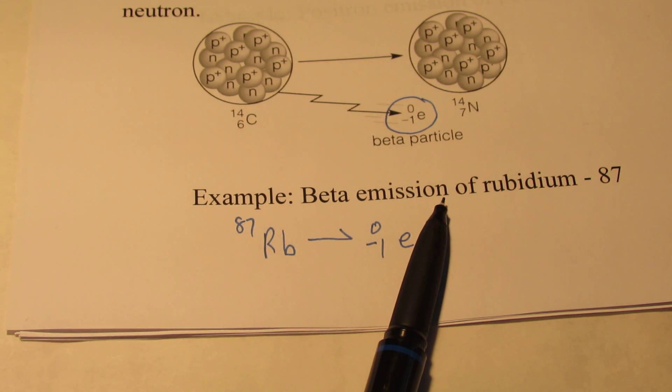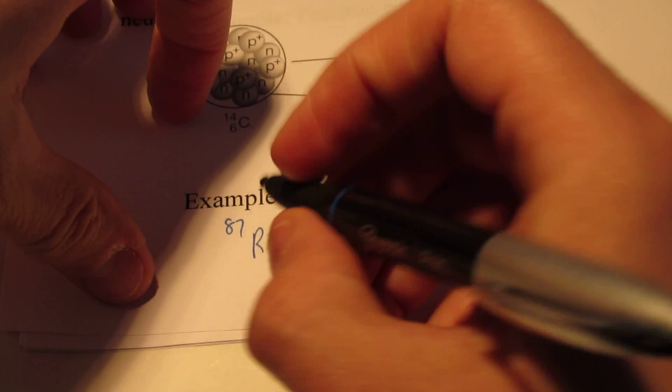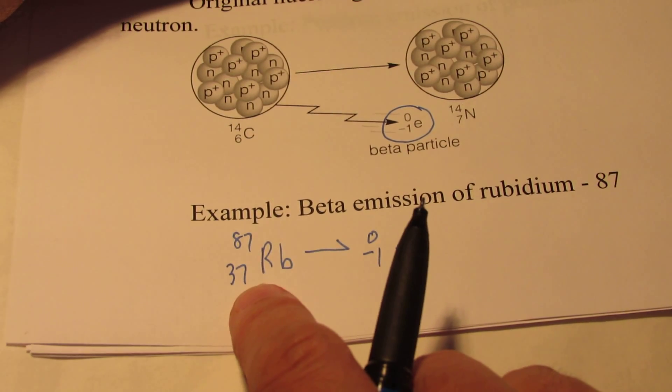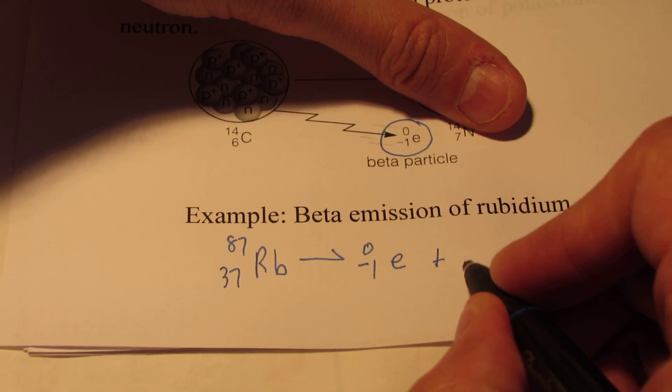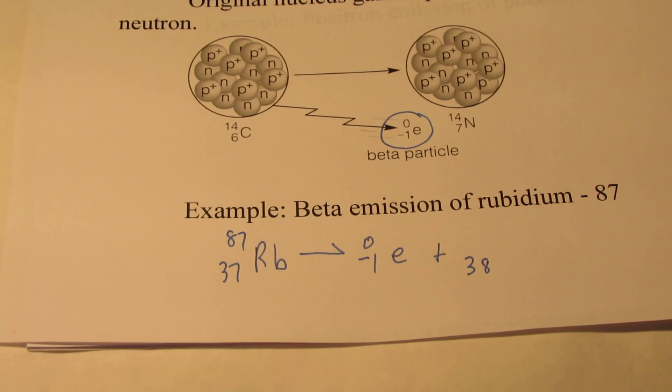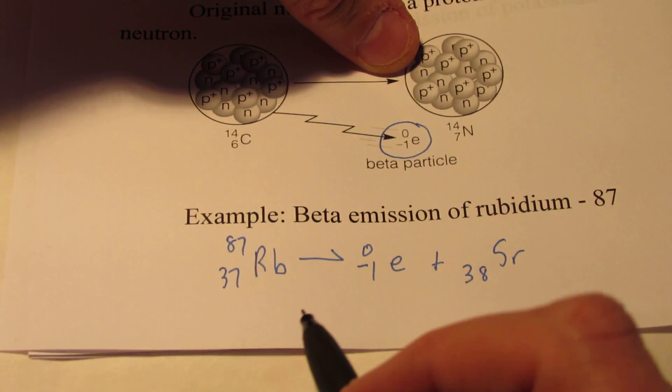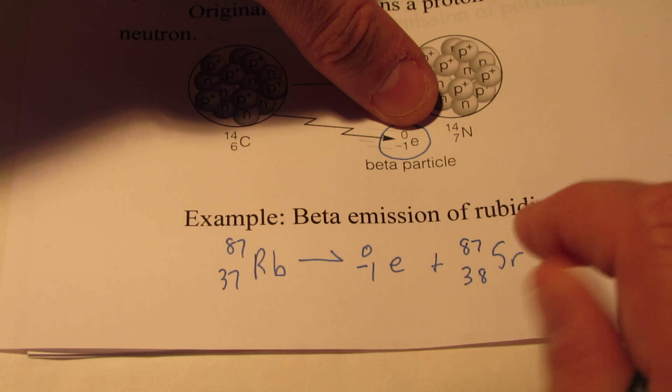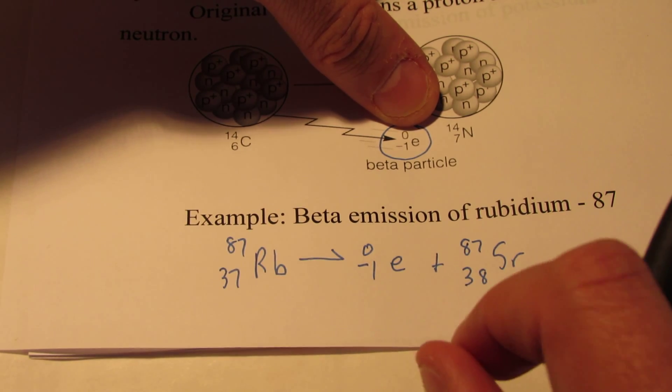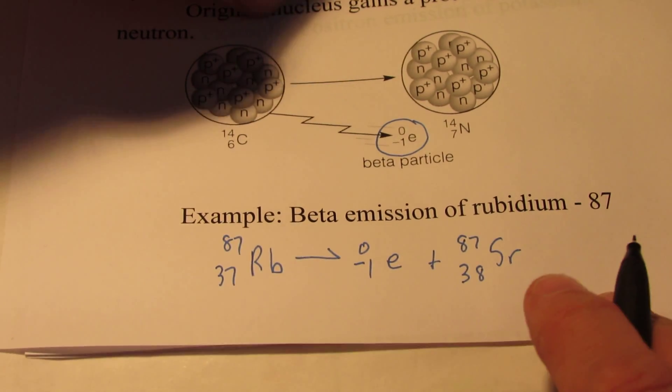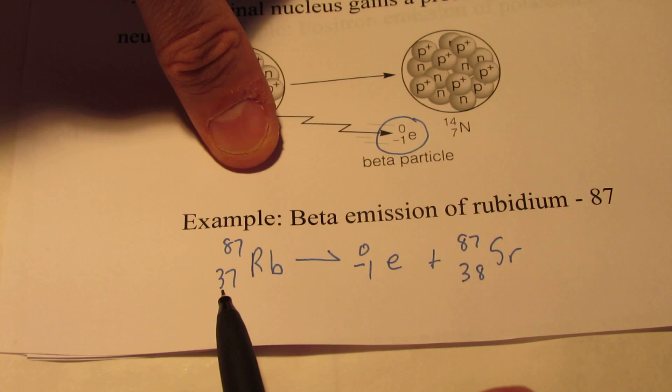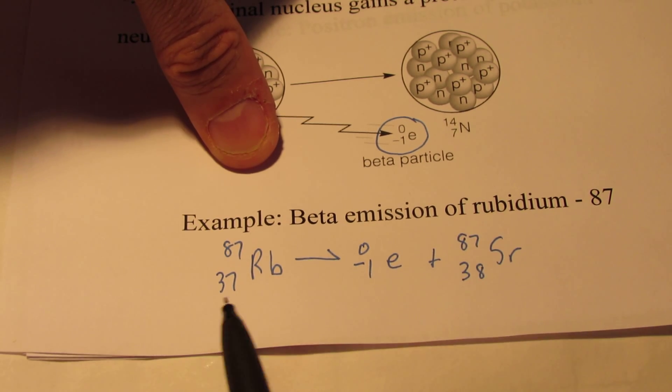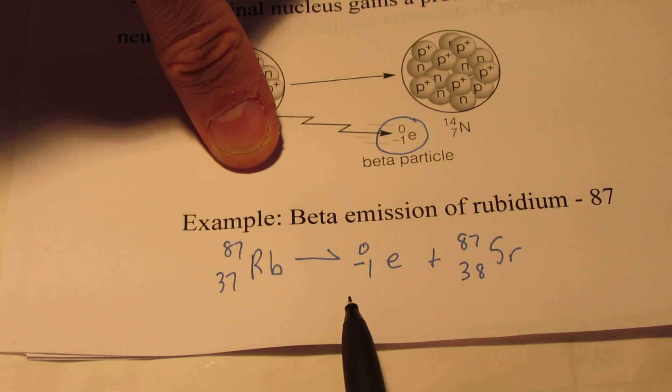Now if a neutron turns into a proton, we are going to end up with a particle with 38 protons. Now the element with the atomic number 38 is strontium, Sr. So we've transmutated rubidium into strontium. Notice the mass number stays the same. We still have the same number of protons plus neutrons. Simply a neutron turned into a proton, so the total number stays the same.